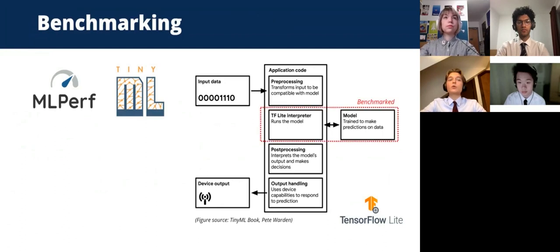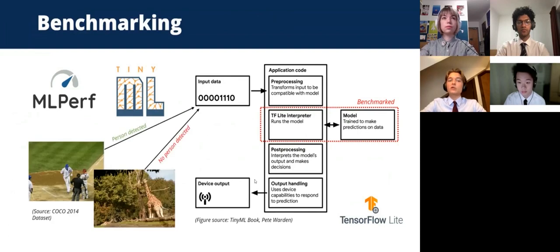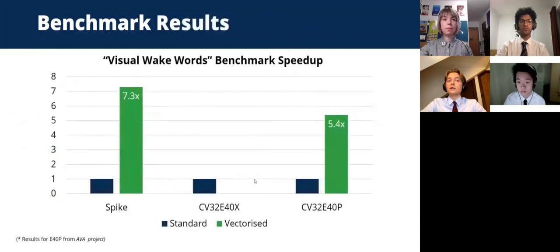From this suite, we used the Visual Wake Word Detection application, which uses an implementation of the MobileNet V1 architecture — a convolutional neural network — that given an image, detects whether a person is present in frame. The benchmark runs two separate invocations: once with a person in frame and once without. We adapted this benchmark to run on our target architecture, including when accelerated with vector instructions. Throughout the project, we used the Spike ISA simulator to develop and debug software before hardware implementation was available. The Spike results show the expected speedup when vector instructions are employed. We also collected results for this benchmark on the E40X core.